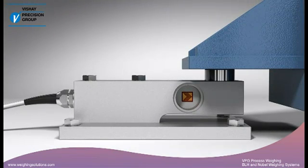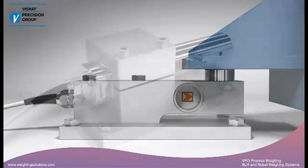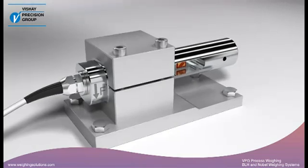BLH and Nobel Weighing Systems, brands of VPG process weighing, invented a unique load cell that continues to deliver great performance even when conditions are far from ideal. We call it the KISS load cell.